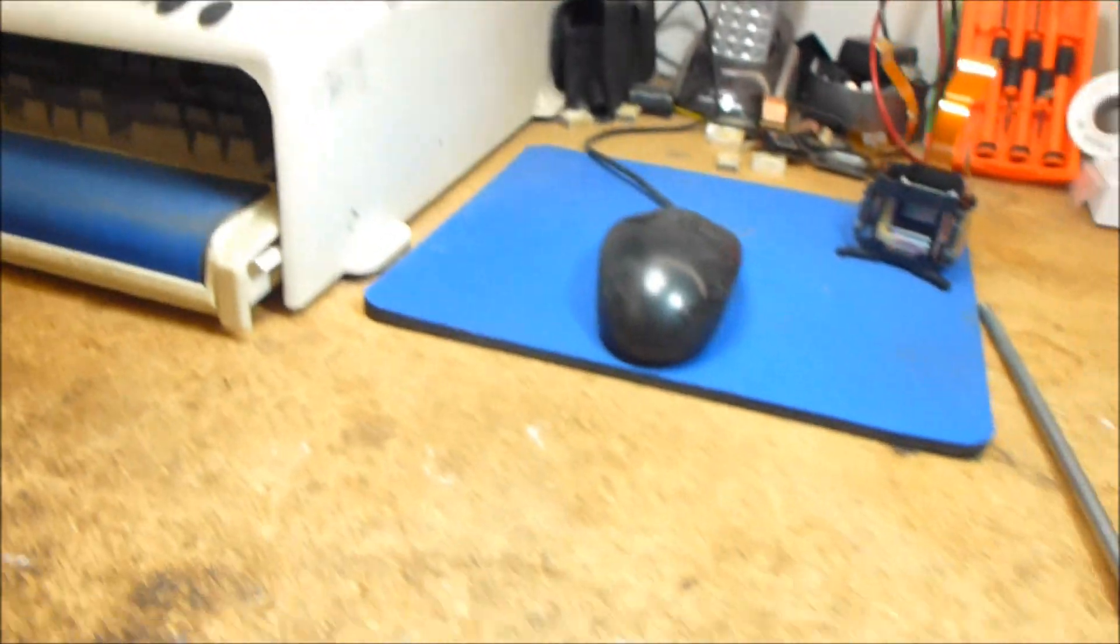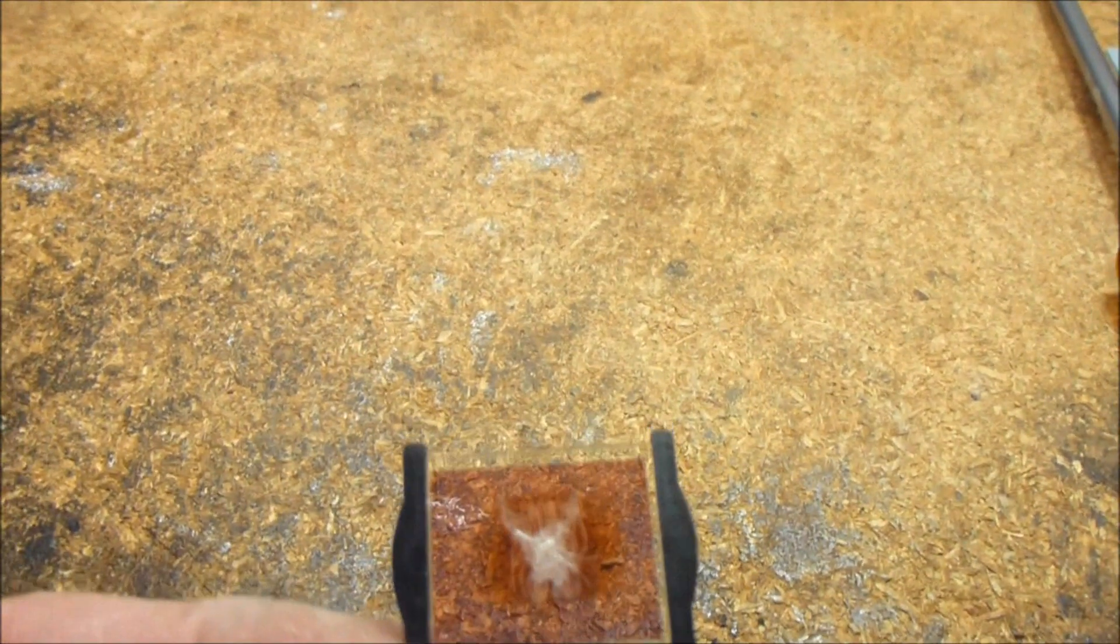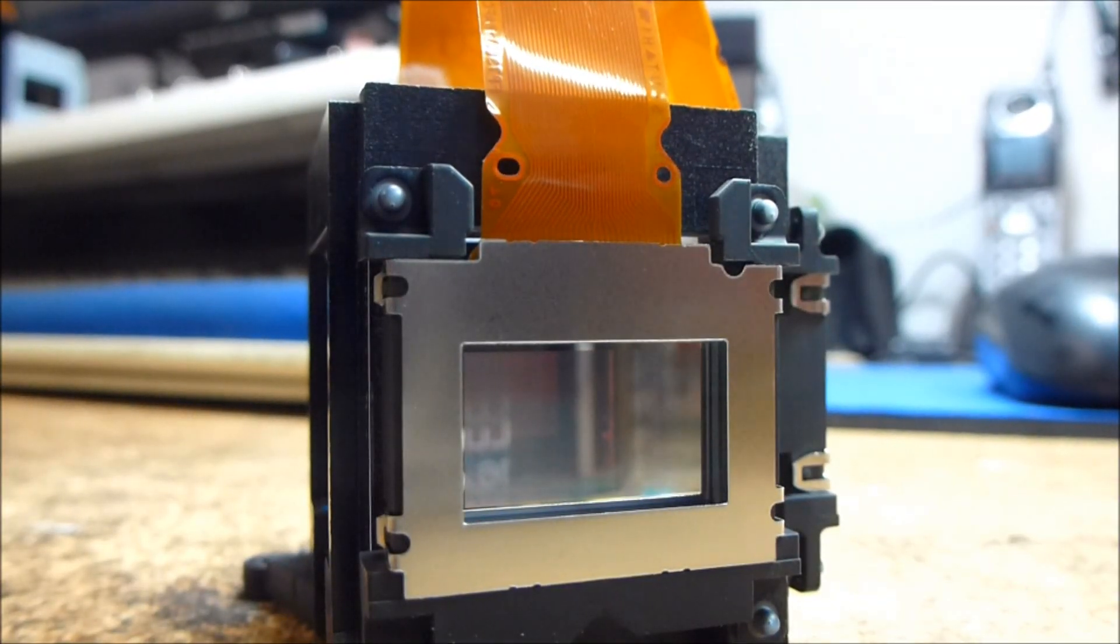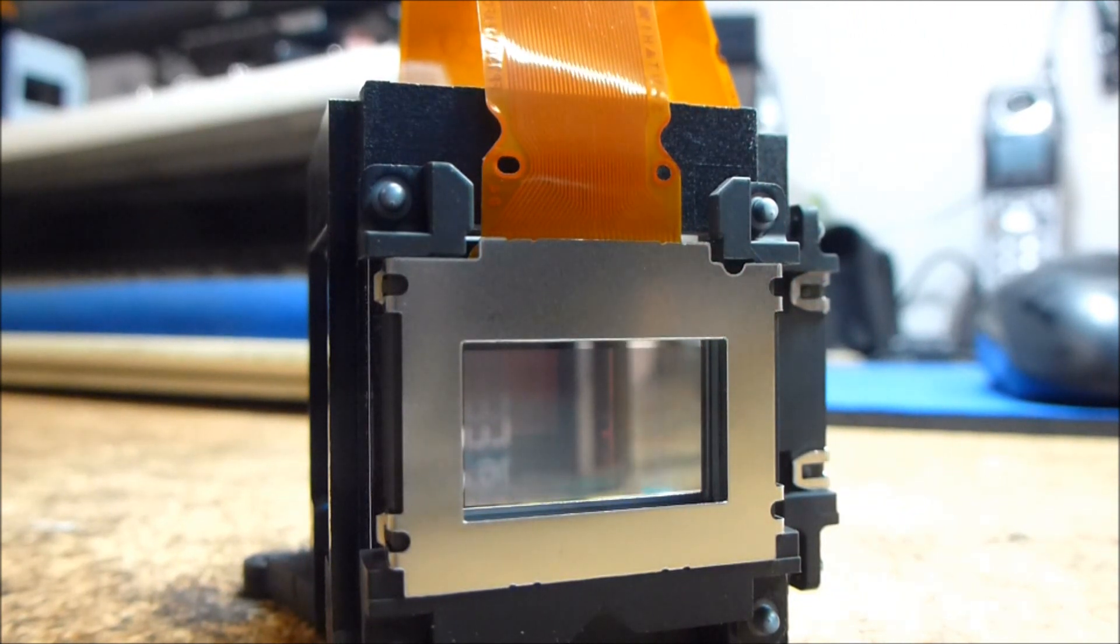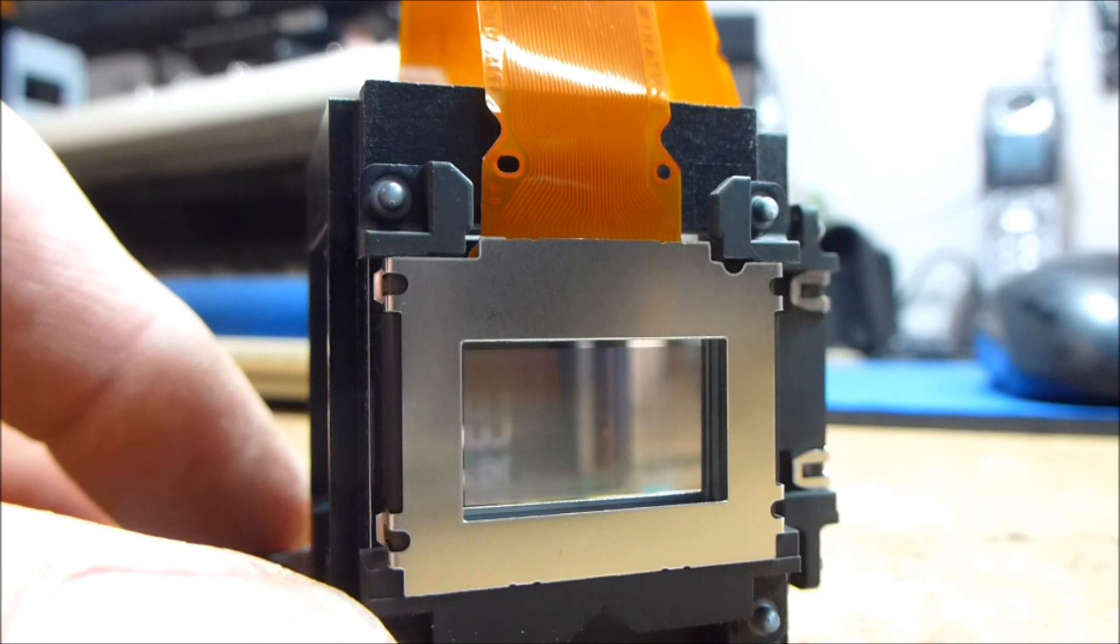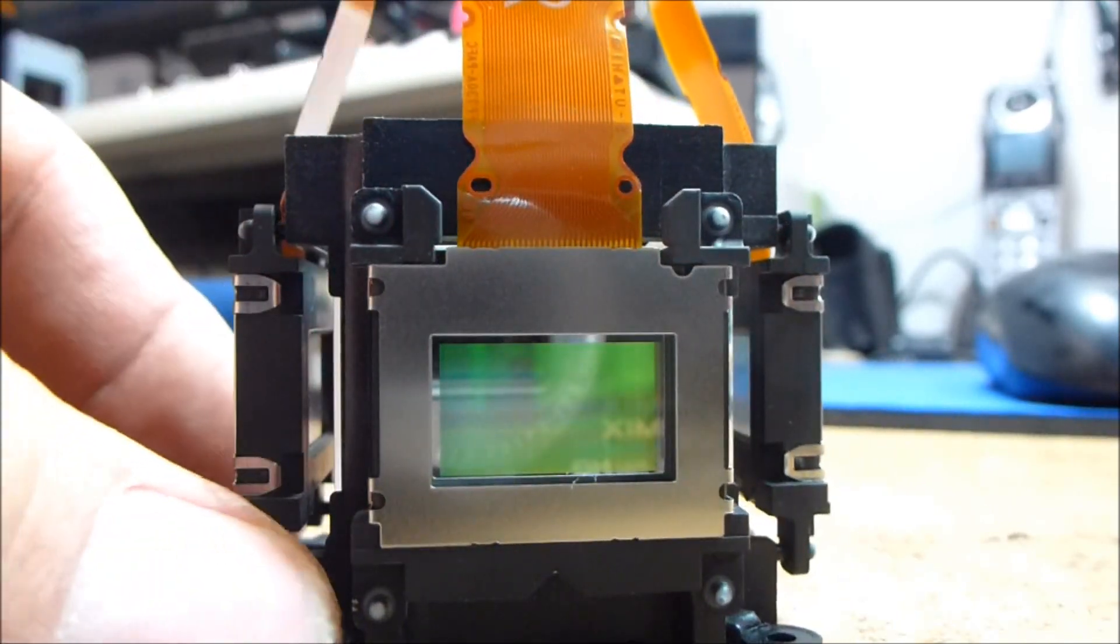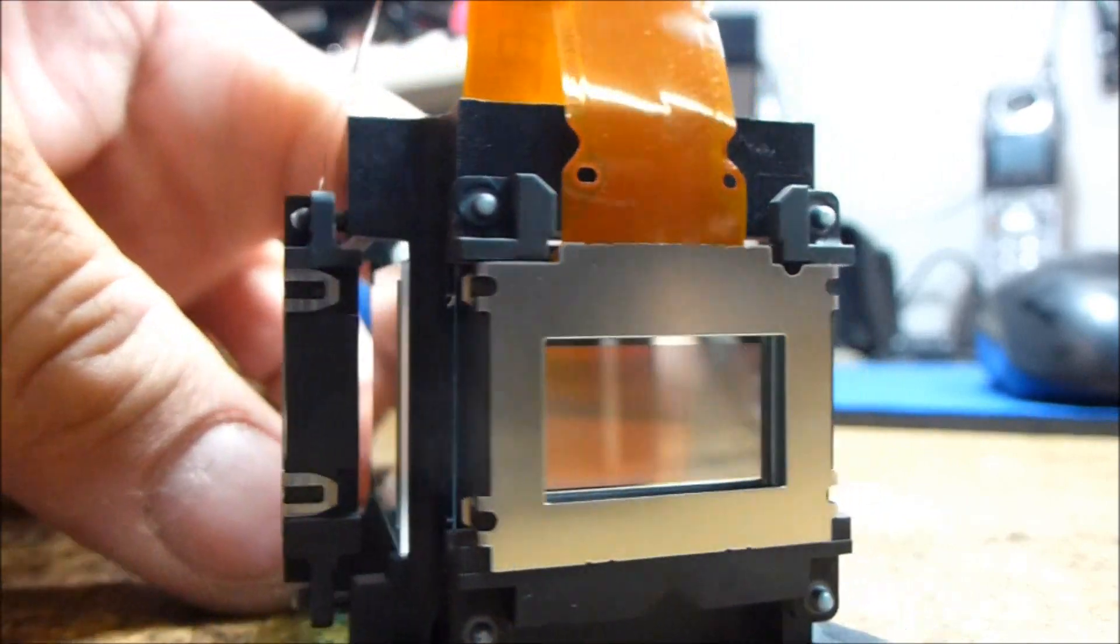But let me show you the actual LCD panel assembly in this TV real quick. So if you remember the other videos that I made on these particular TVs, we talked about removing the LCD panels off of the optic assembly here and replacing defective ones with good ones.